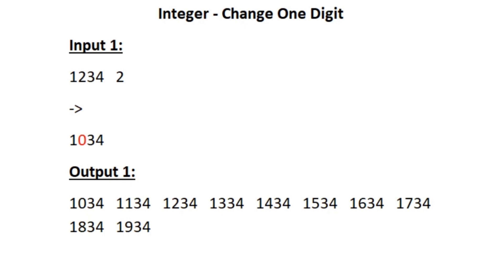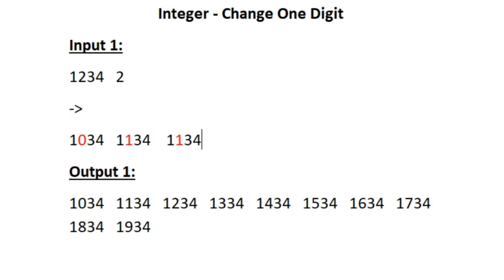This integer would be the smallest possible integer to be formed. For the second integer, the second digit will now be replaced with the digit 1, which would be the second smallest integer out of the 10 integers. For the third, we replace the second digit with 2. This is how we will be forming those 10 integers, replacing the second digit with the digits from 0 to 9 to get our expected output.